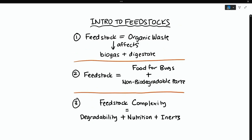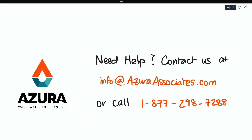To summarize: feedstocks are organic waste that go into a digester to break down. The feedstock affects the gas and digestate composition. Feedstocks serve as food for bugs, but they can contain non-biodegradable materials that the bugs can't eat. Feedstock complexity depends on the degradability of your waste, its nutritional content, and the amount and type of inerts present. Thanks for watching! Like this video and hit the subscribe button to be notified of our newest videos.